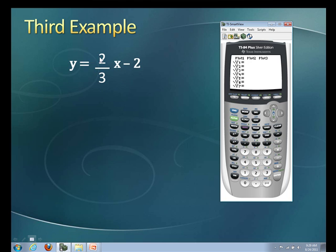I have a fraction here. So remember, we're going to put that in parentheses. So we're going to click parentheses, 2 divided by 3, end parentheses, and then our variable key, this guy right here, to get our x in. Then finally subtract 2. We're going to click the graph key. And here's the picture for y equals 2 thirds x minus 2.